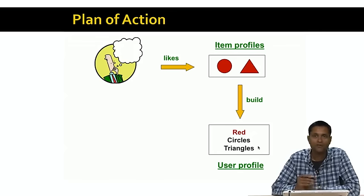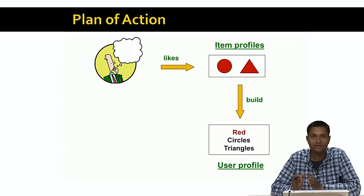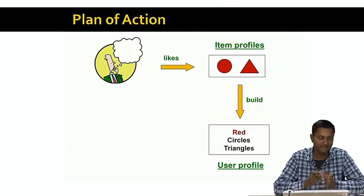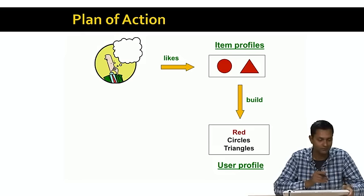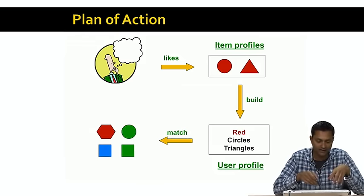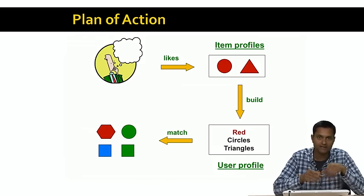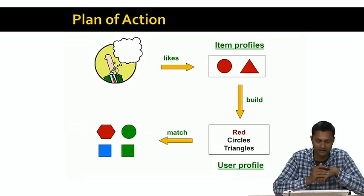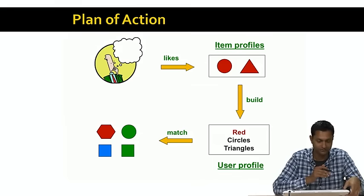Once we have a profile of the user, we can then match that against the catalog and recommend other items to the user. So let's say the catalog has a bunch of items in it. Some of those items are red, so we can recommend those to the user.